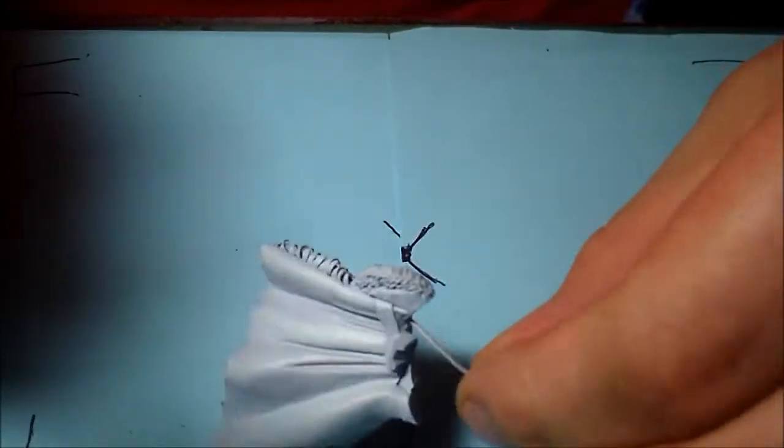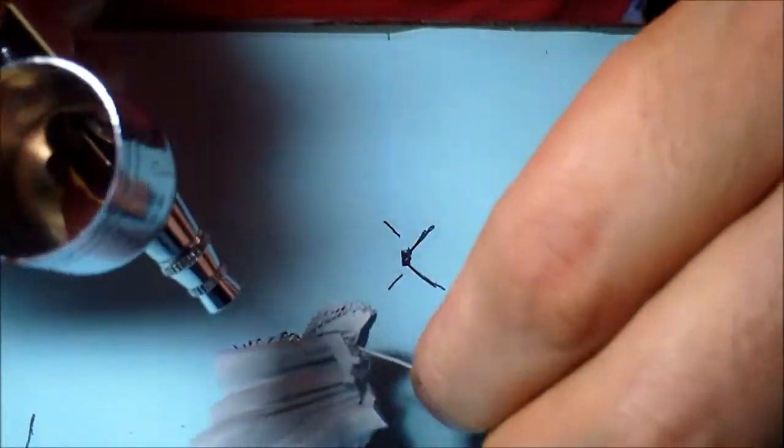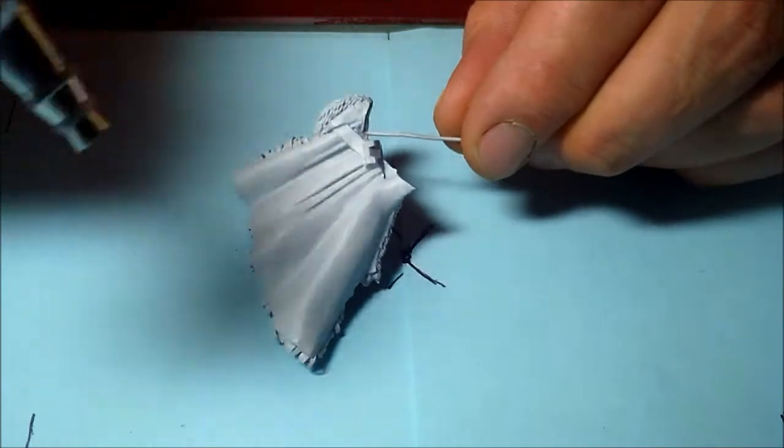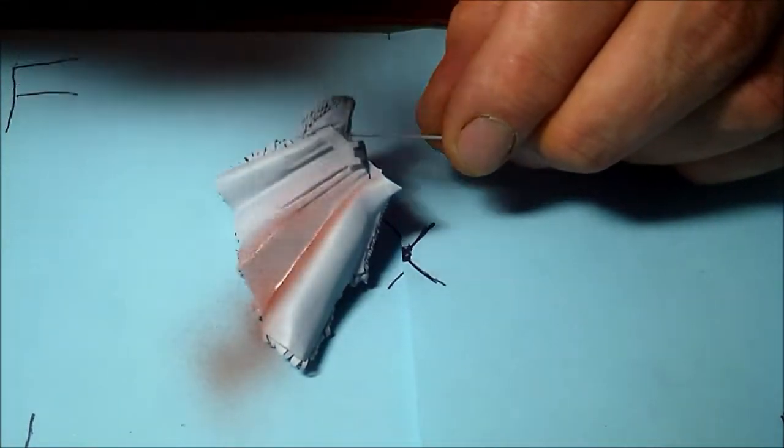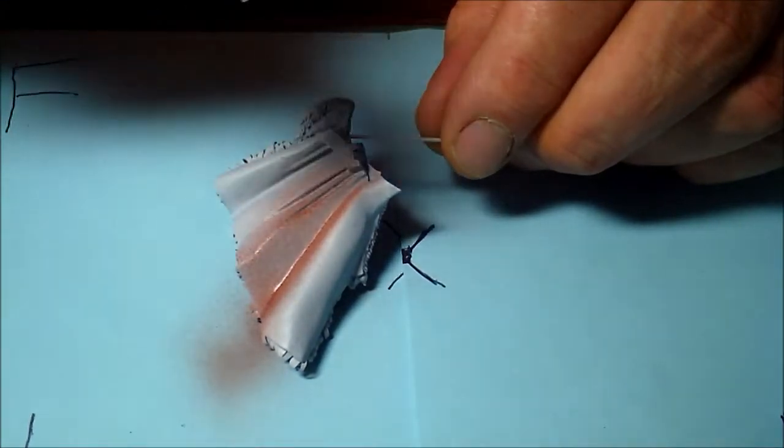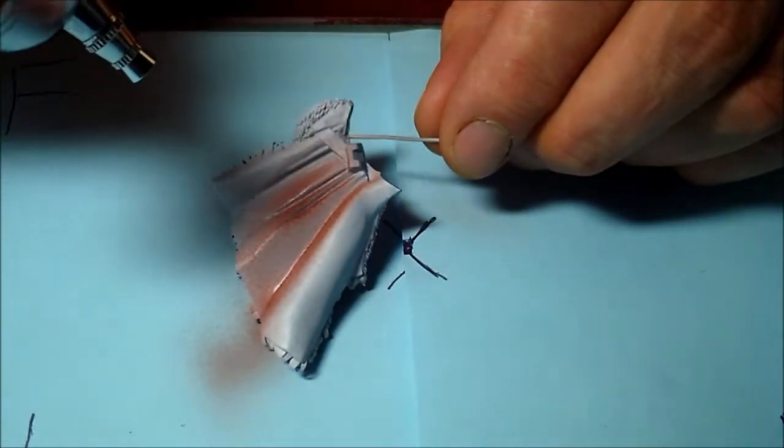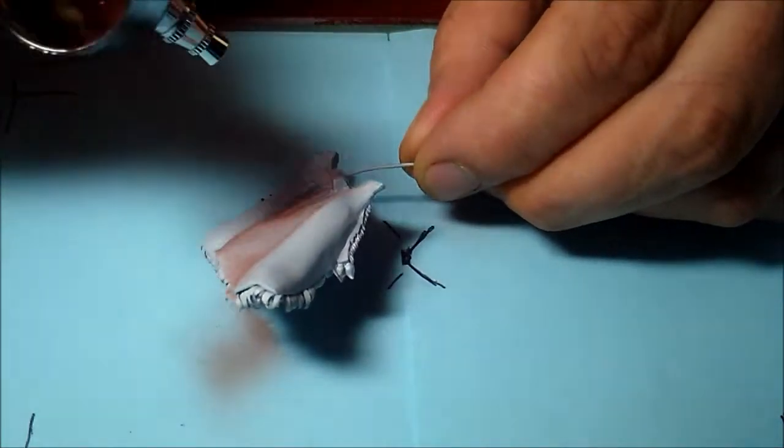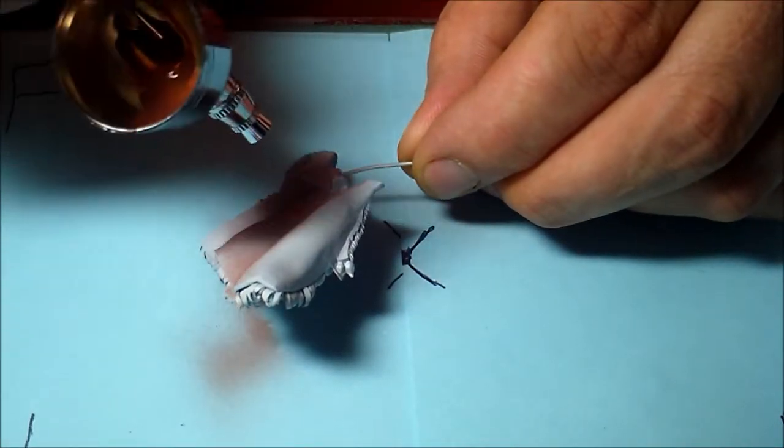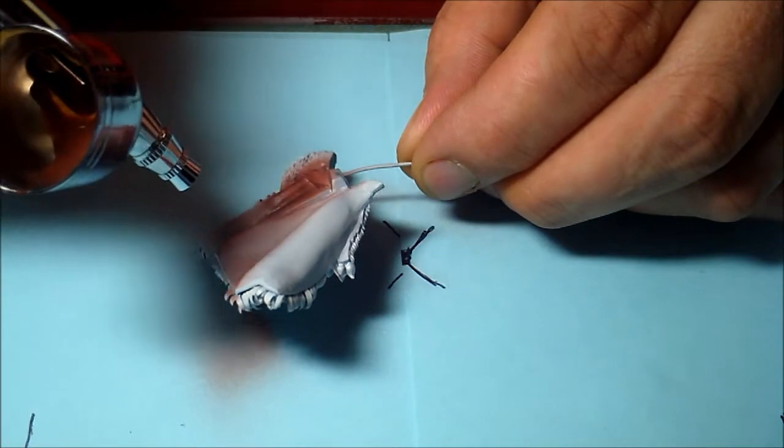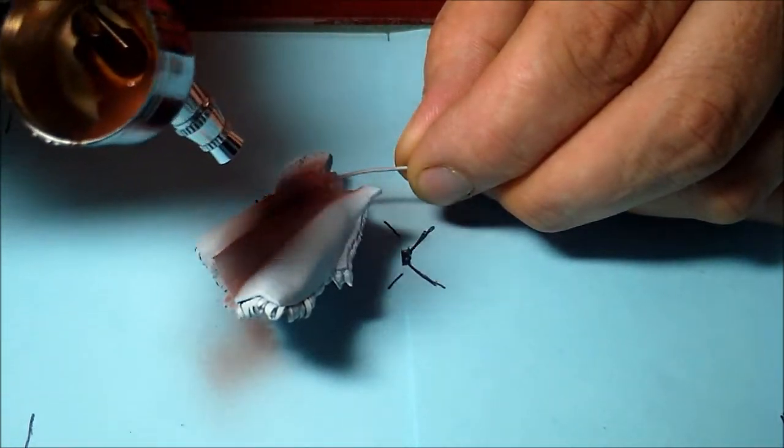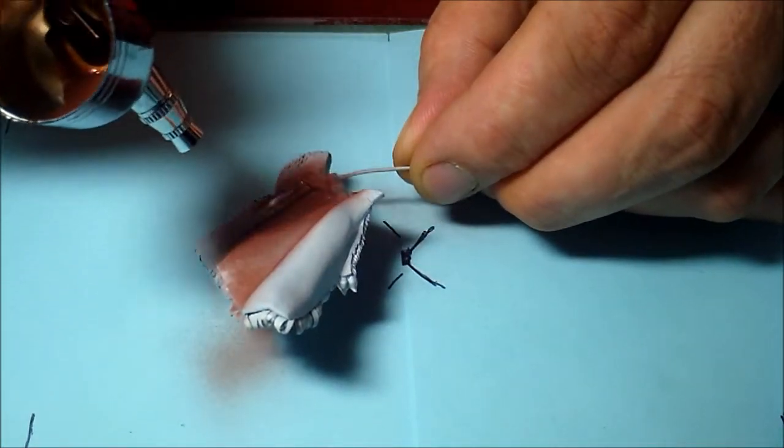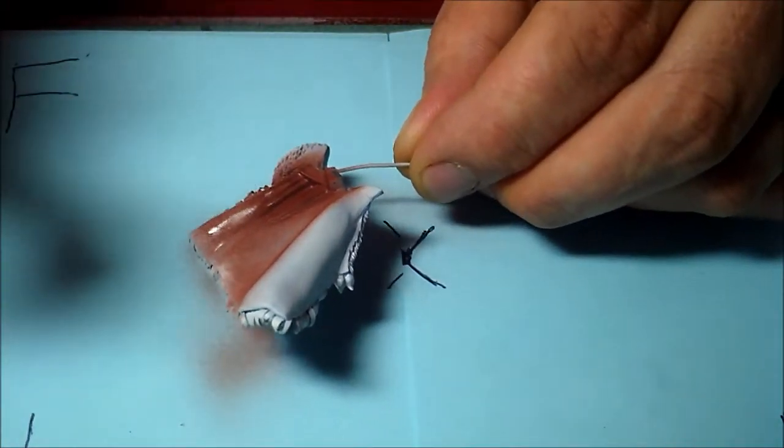I'll start with a base coat of Scorch Brown. I'm just mainly working this into the creases, just onto the dark areas.